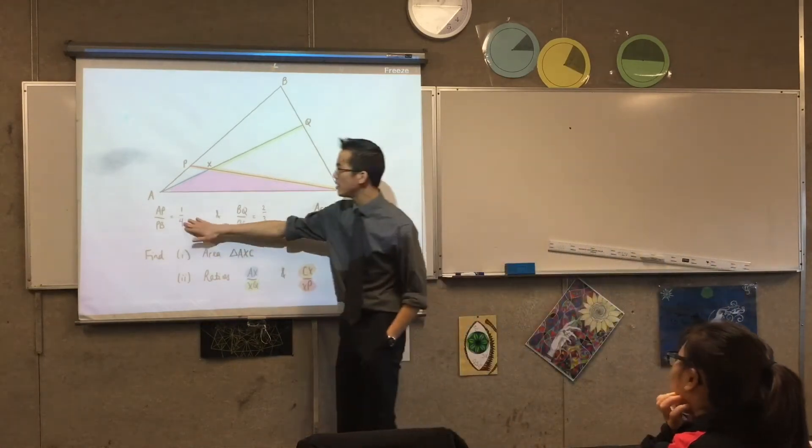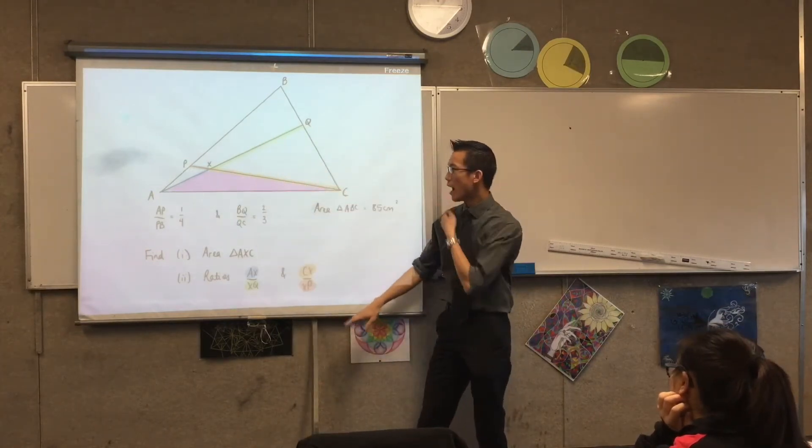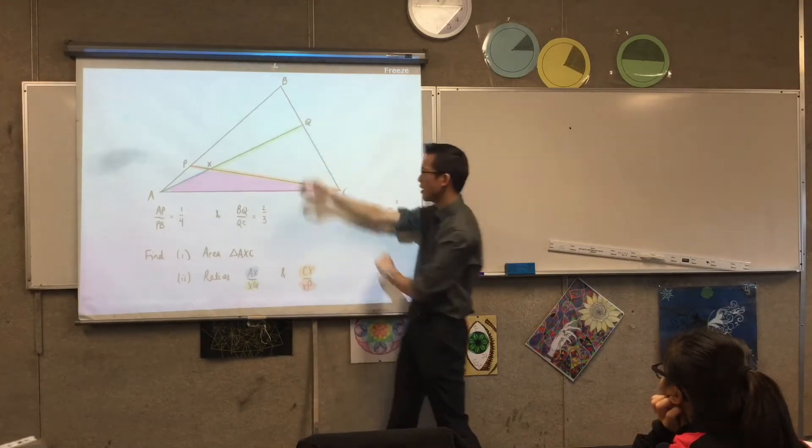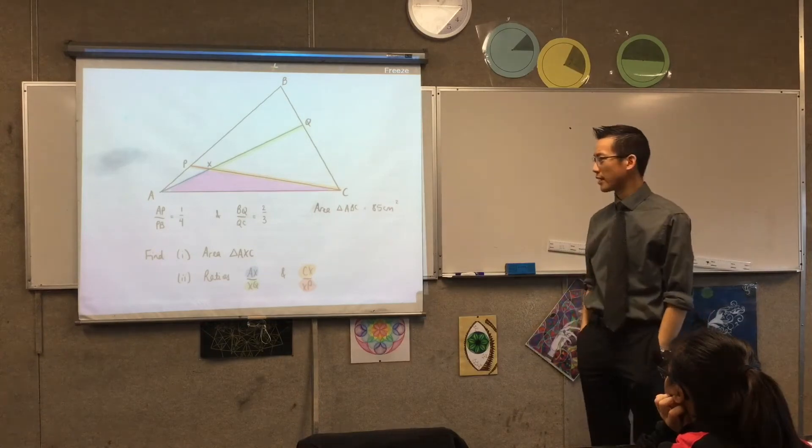You get these two ratios here, so this length to this length, one to four, this length to this length, so that's these two sides over here, two to three, and then they just give you the whole area of the triangle, okay?